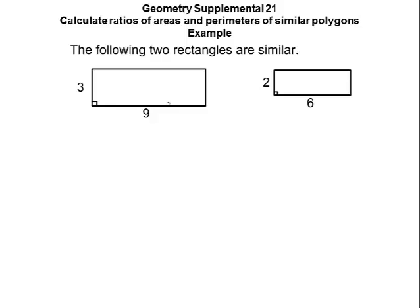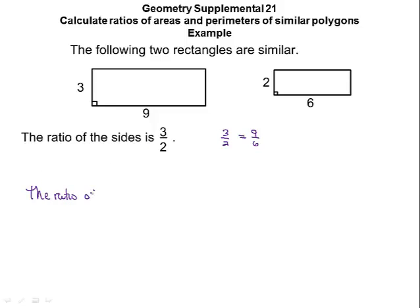Here we have two similar rectangles. The ratio of their sides is 3 to 2 — I have 3 over 2 for the small one, and 9 over 6 for the large one. When I reduce 9 over 6, it equals 3 to 2, so we use the reduced ratio. The perimeter of the large one is 2 times 9 plus 2 times 3, which is 18 plus 6, equaling 24. The perimeter of the small one is 12 plus 4, which is 16.